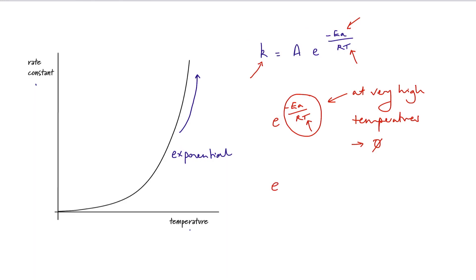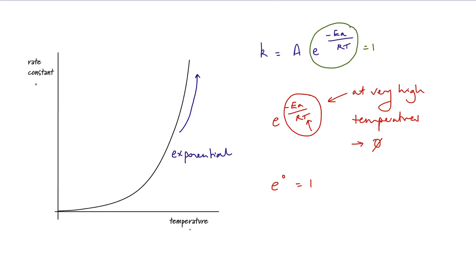Now e to the power of zero equals one — you can put it into your calculator and check that. So at exceedingly high temperatures, this term equals one, which means that all collisions have sufficient energy to react. In which case the rate constant K is equal to our Arrhenius constant or pre-exponential factor.